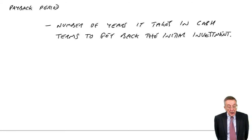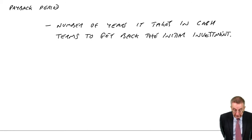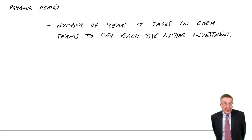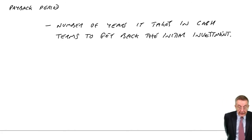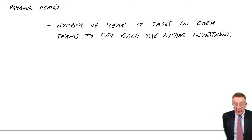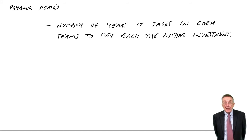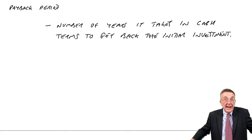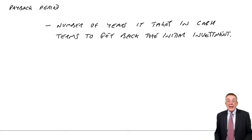A new project will cost us a hundred thousand. It's going to last, we think, five years with no scrap value. We expect it to generate operating cash flows as follows. Remember, the operating cash flows are your cash receipts, the sales, less all the cash expenses. It's like the profit each year, but in cash terms. We expect to get 20,000 in the first year, 30 in the second, 40 in the third, and so on.